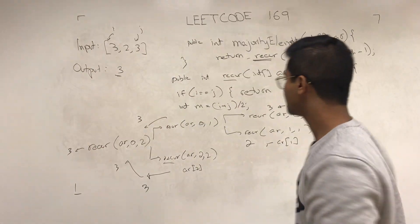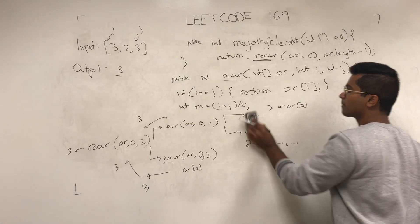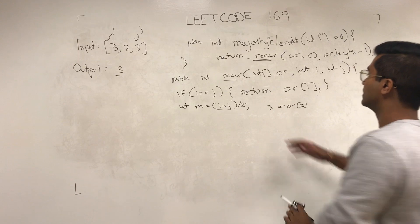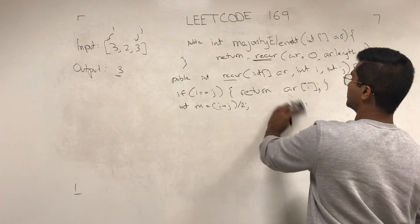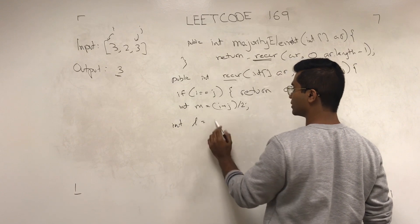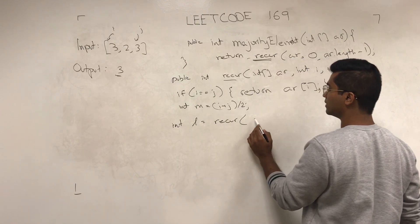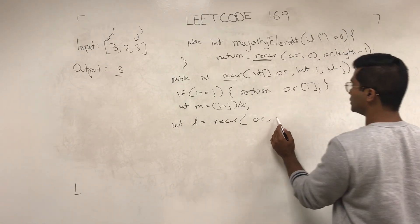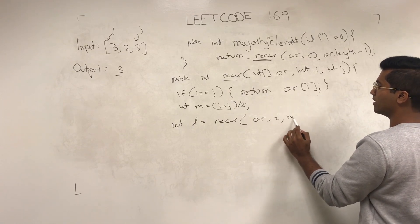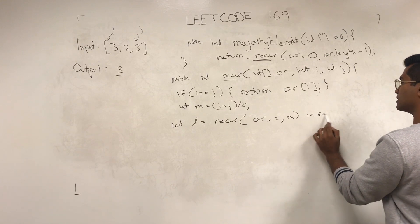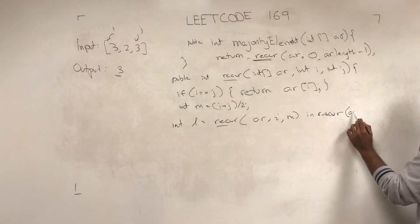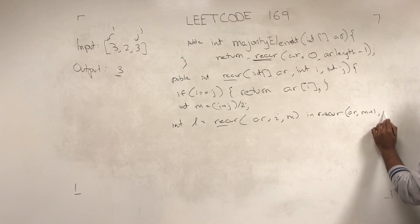Now let's get into the code. Okay, there we go. So int l is going to be recur AR, i, and m. And then int r is going to be recur m plus one then j.